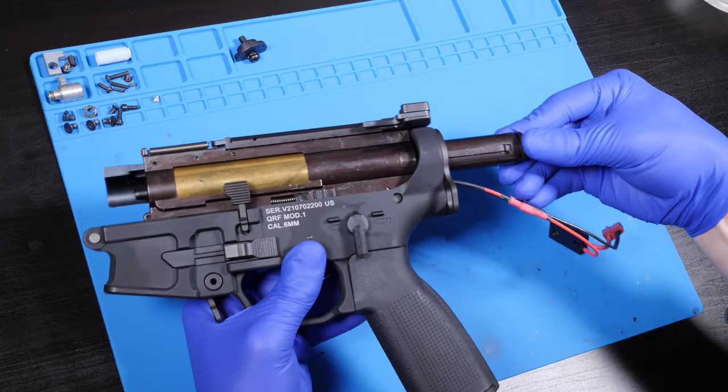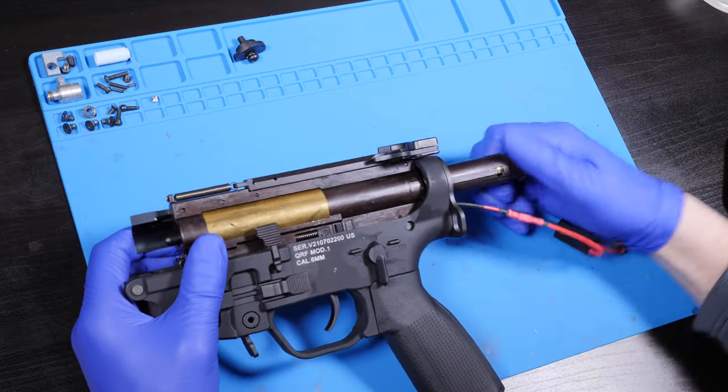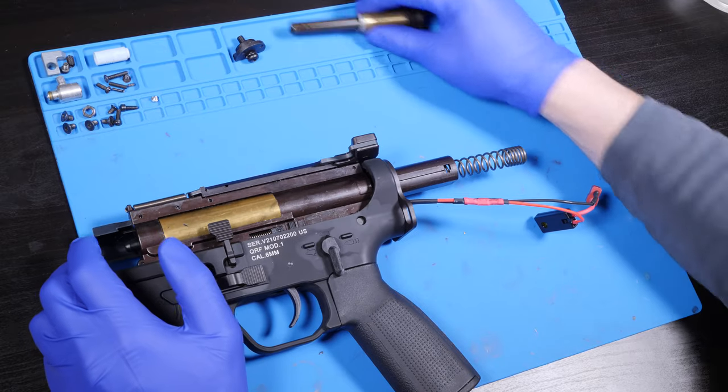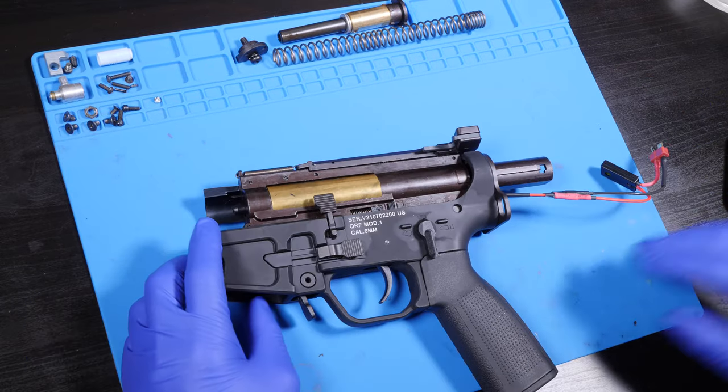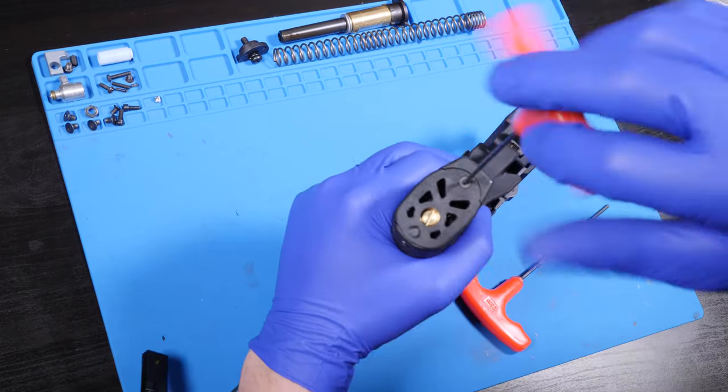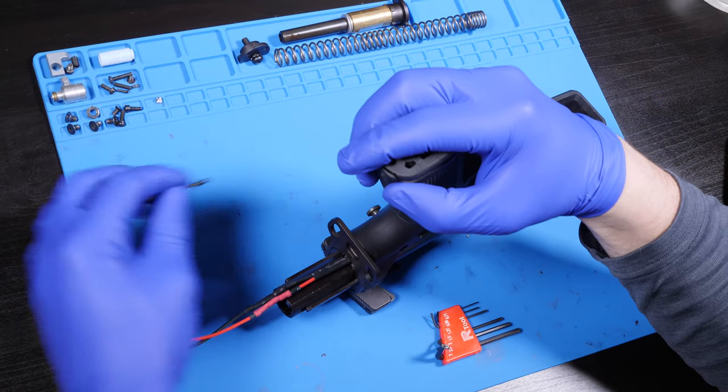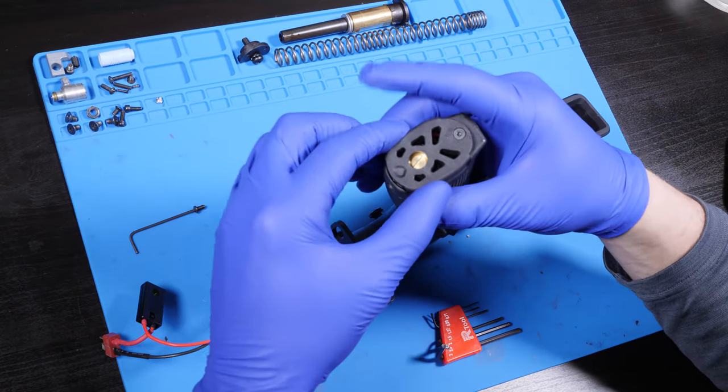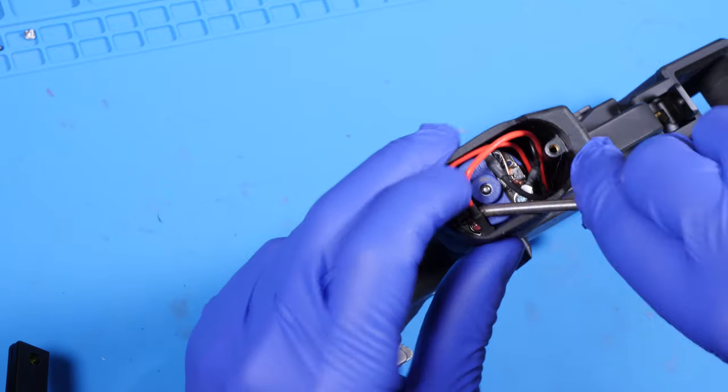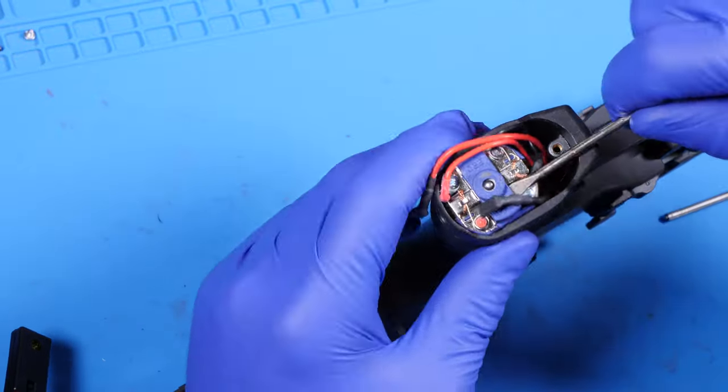With the buffer tube completely removed, I can now access and remove the quick change spring. Next up is the pistol grip. On the QRF there are two screws, one at the base and one at the rear of the grip. Removing them both is gonna allow the base plate to come off, revealing the motor. Using a small punch tool, I unhook both motor connection points and then pull the motor out.